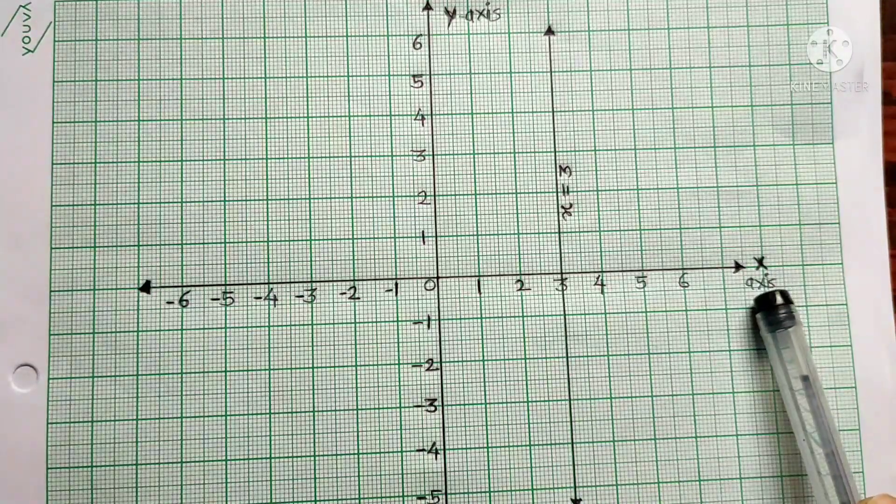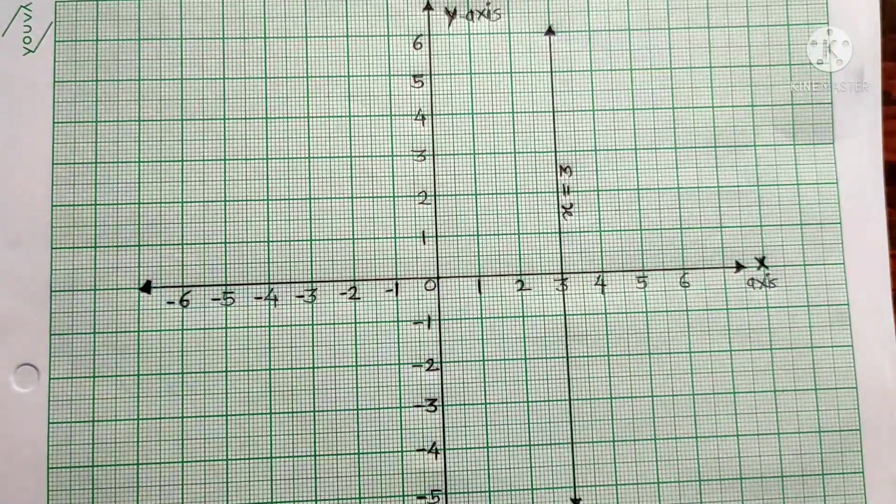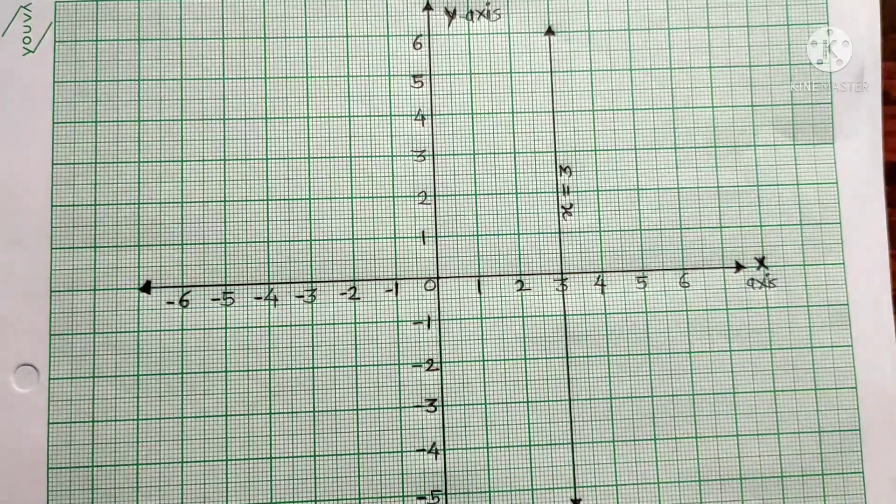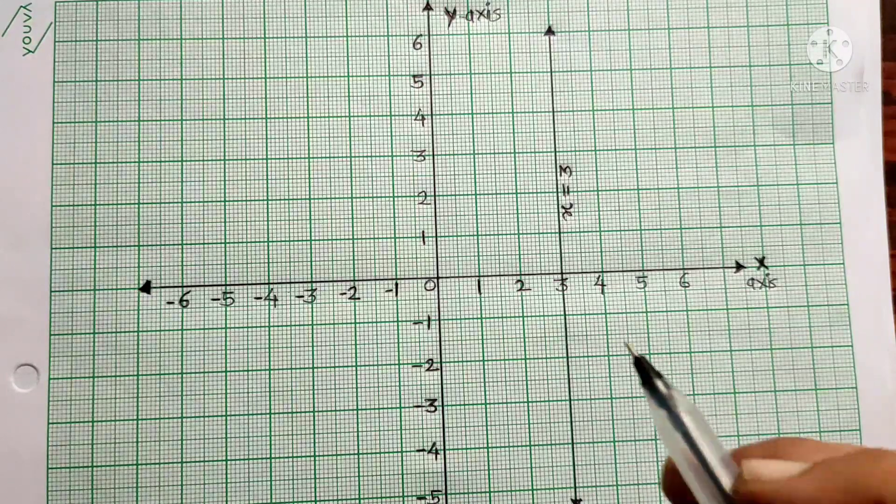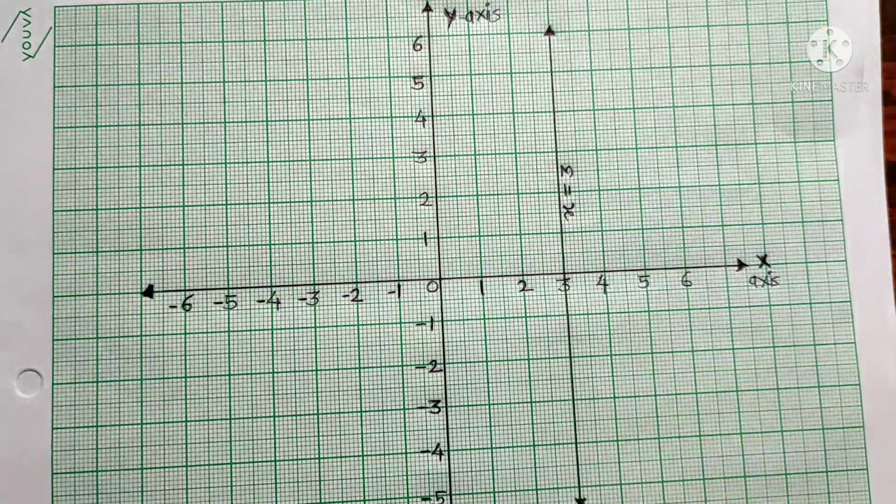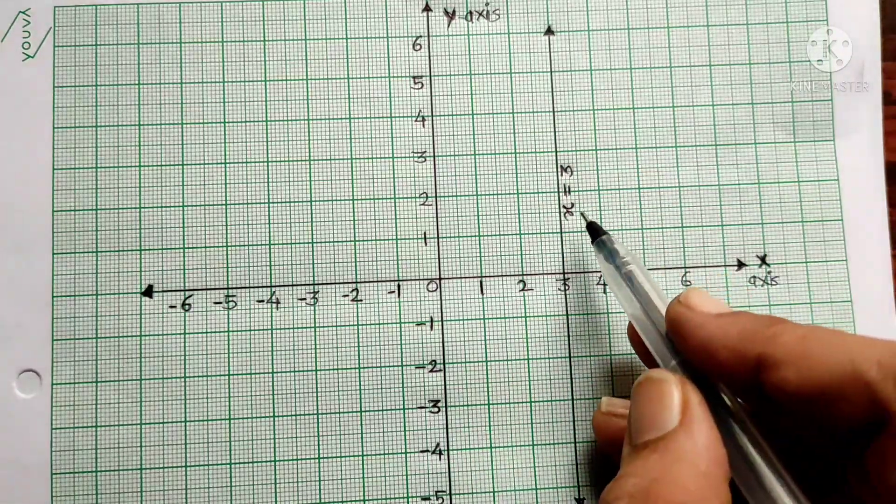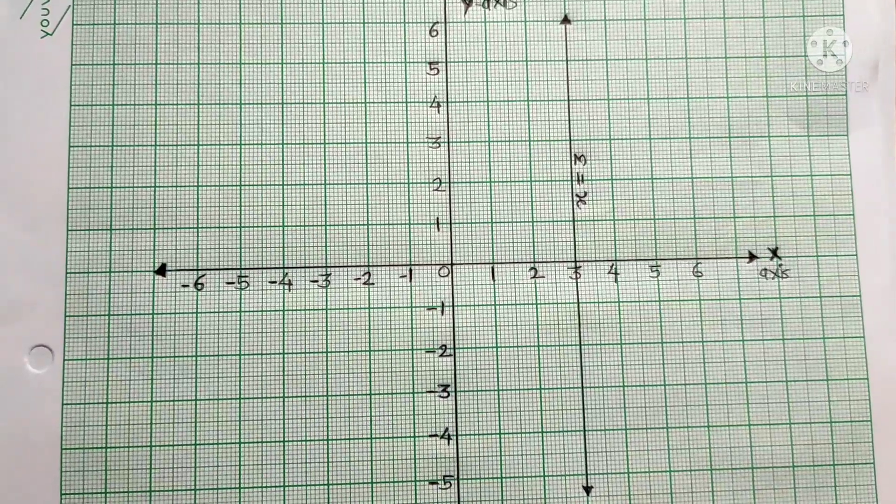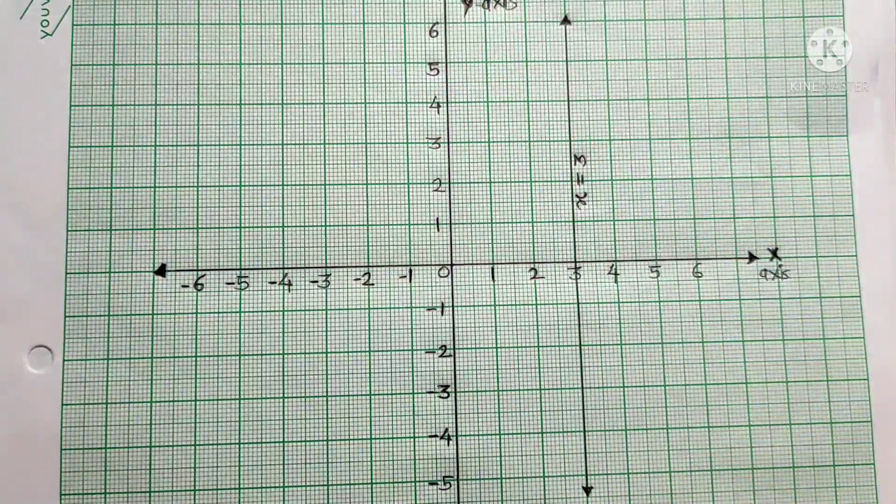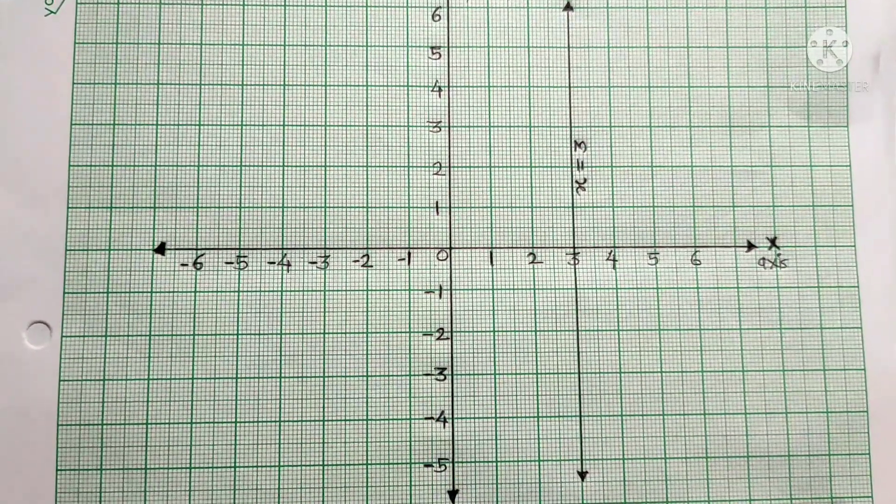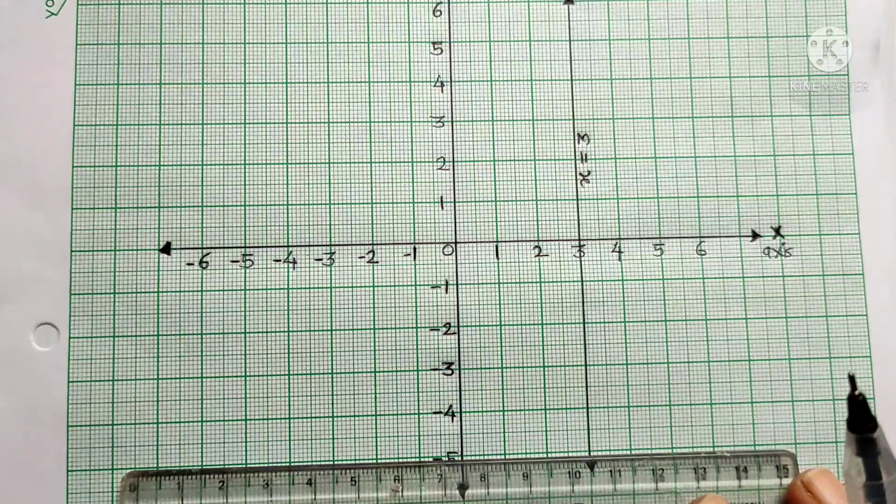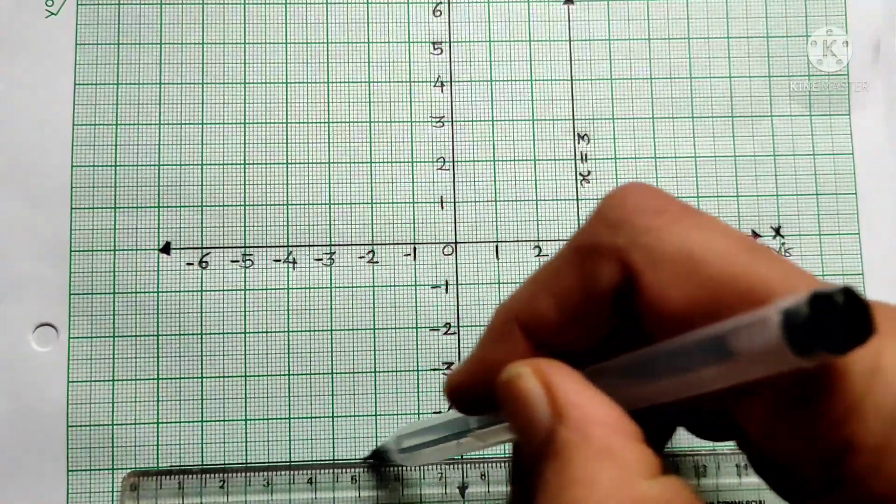x equals 3 means on the x-axis, the value is 3. So we draw a line at x equals 3, which is a vertical line parallel to the y-axis.